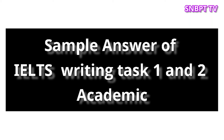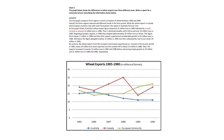The graph below shows the differences in wheat exports over three different areas. Write a report for a university lecturer describing the information shown below. The line graph compares three regions in terms of exports of wheat between 1985 and 1990.